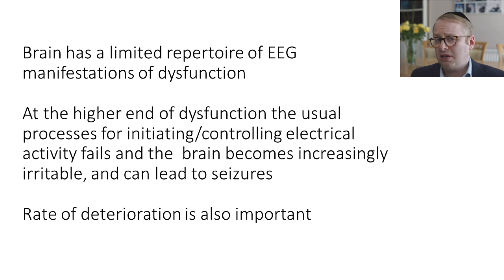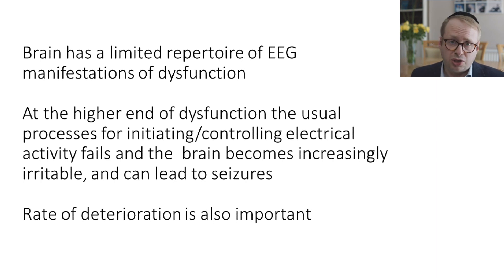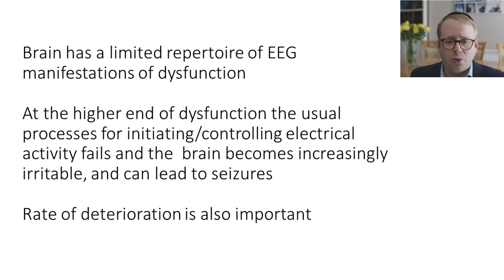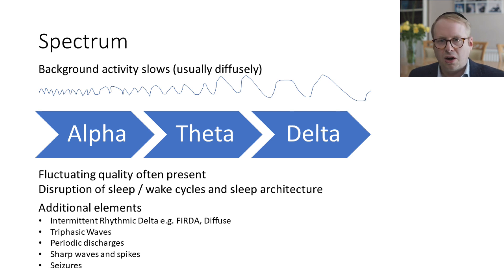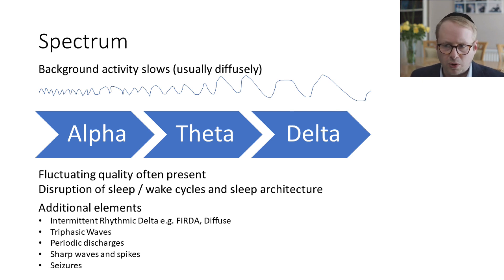In terms of the EEG, the brain has a very limited repertoire of EEG manifestations of dysfunction. We've talked about slowing already, but at the higher end of dysfunction, the processes for initiating or controlling electrical activity fail, and the brain becomes increasingly irritable, which can lead to seizures. Background activity slows from pre-existing alpha through into the theta range and then into delta. It's often fairly diffuse and has a fluctuating quality, which mirrors the fluctuating dysfunction seen in patients with delirium. There's often disruption of sleep-wake cycles and sleep architecture too.